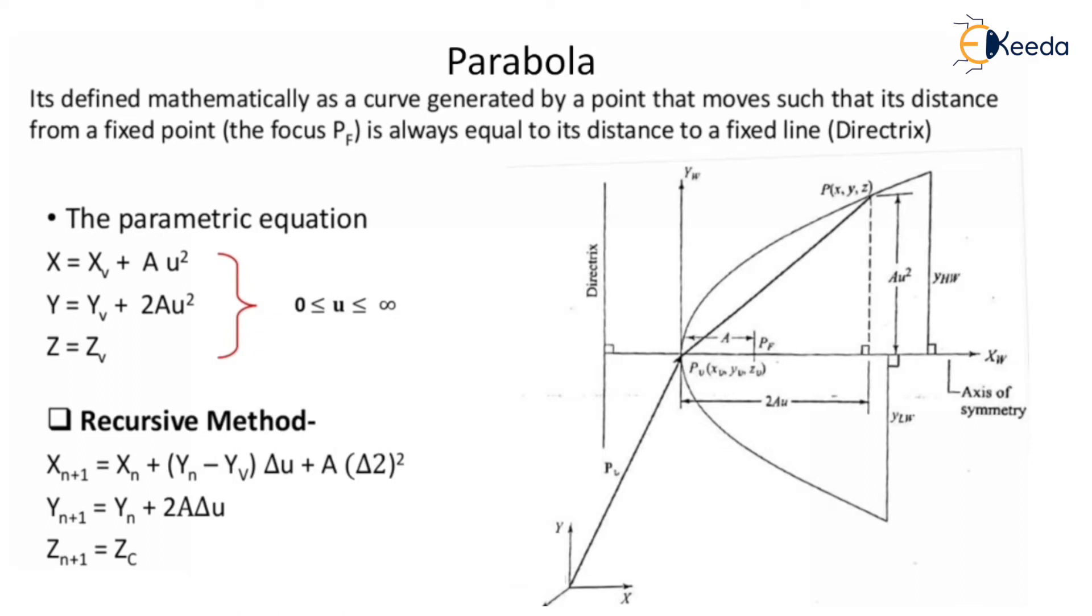From the figure, you will understand that point P(x,y,z) is at au² from the axis of symmetry, where point Pf is at distance a from the focus, while the distance from the directrix will be equal.